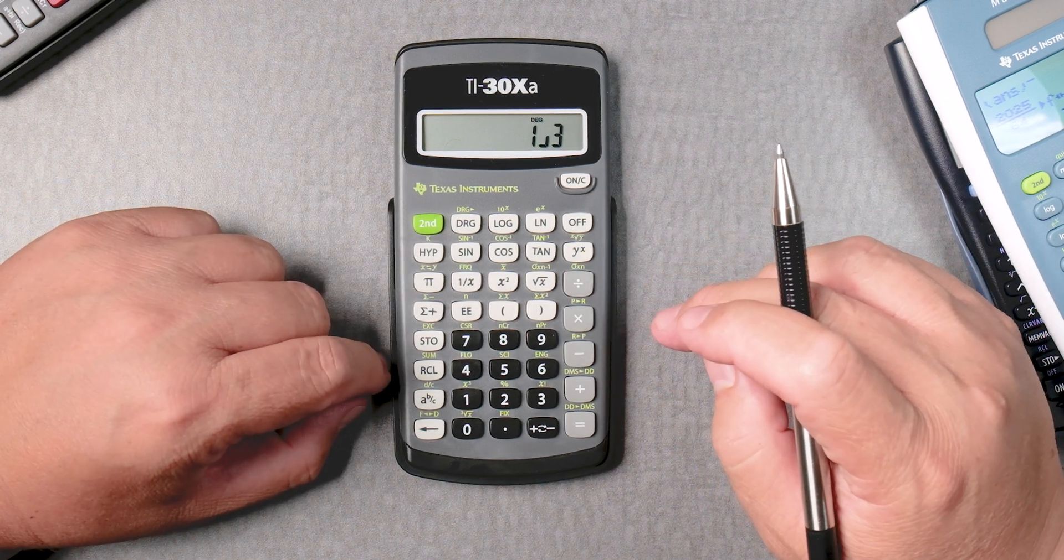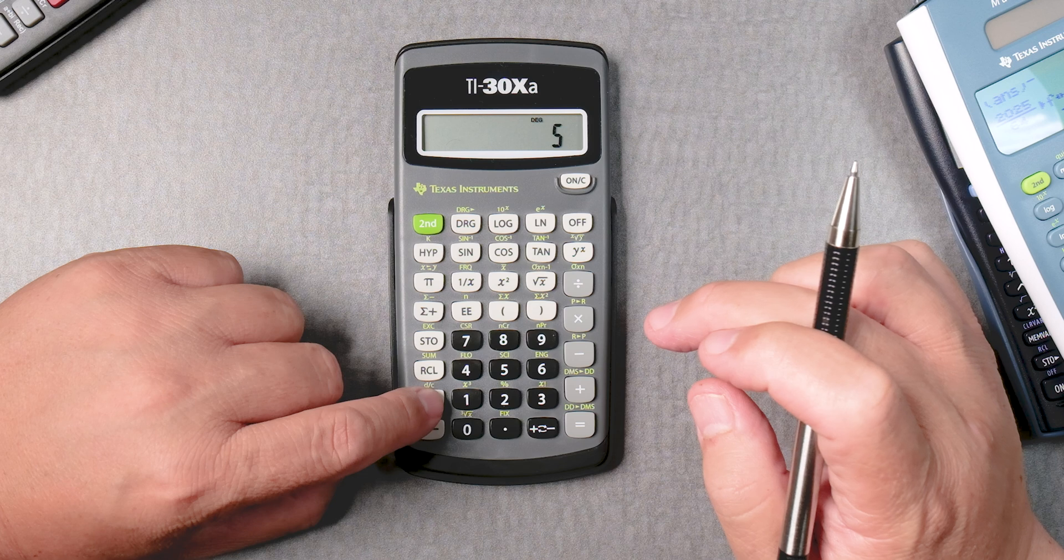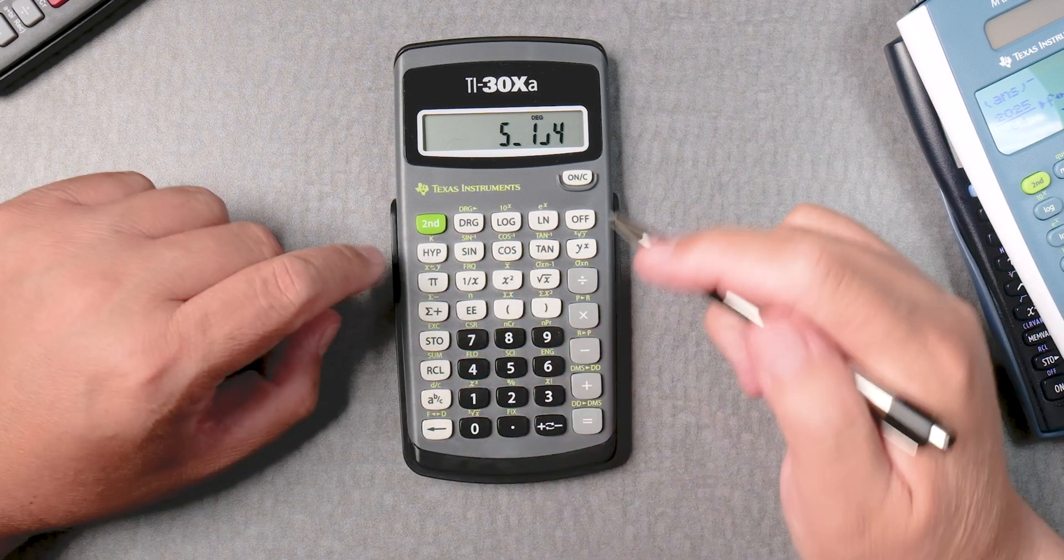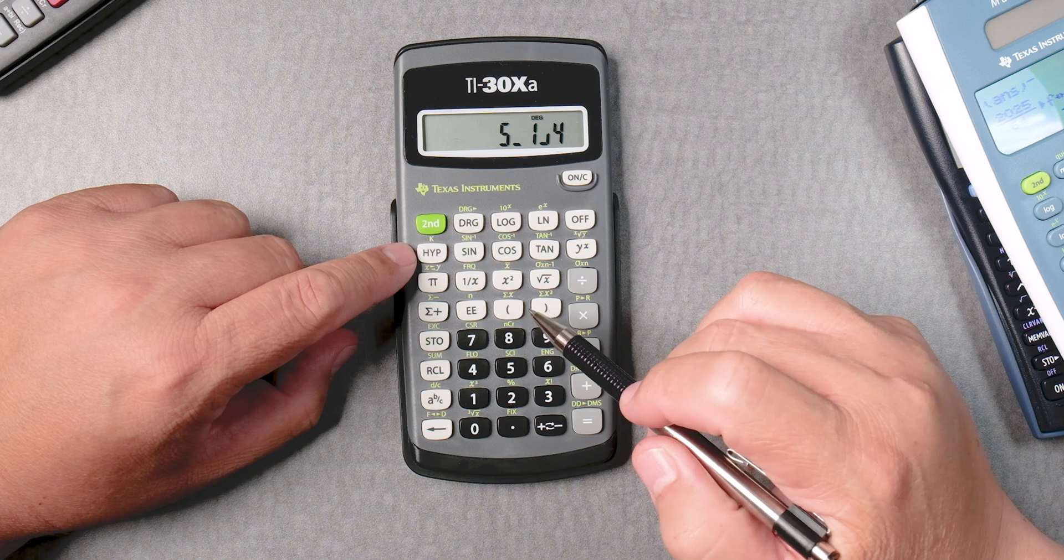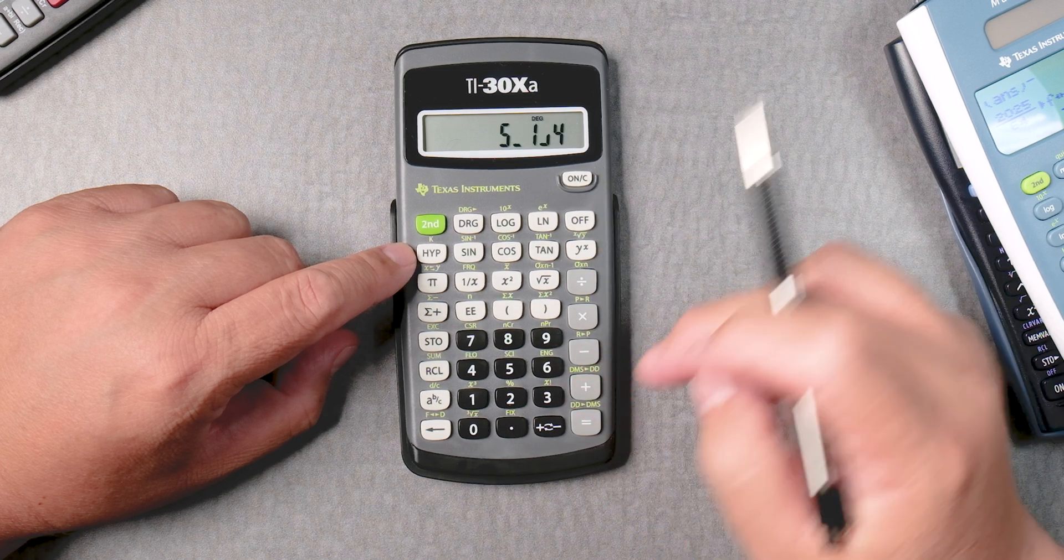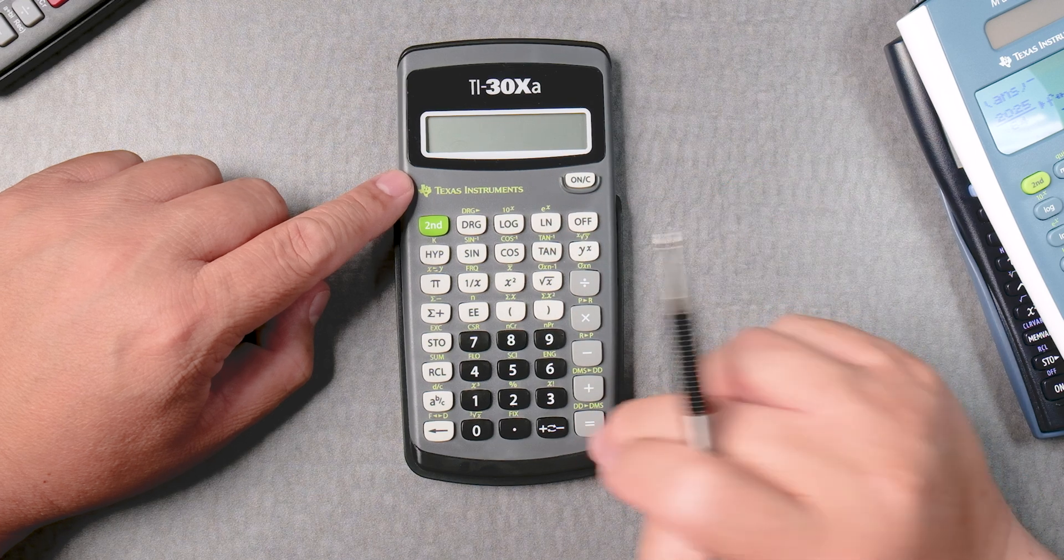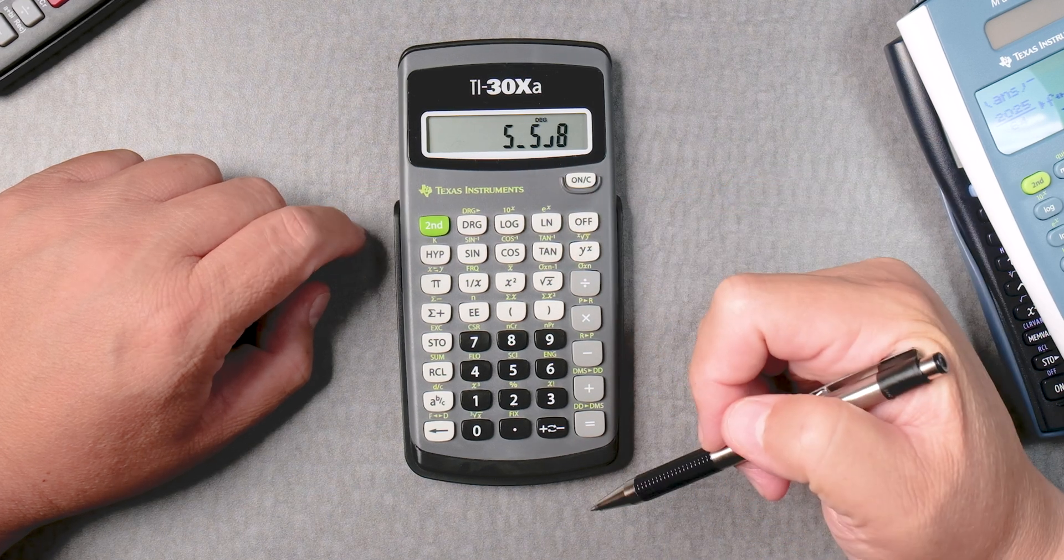Let's say you wanted a mixed number like 5 and 1 fourth, 5 ABC 1 ABC 4, so 5 and 1 fourth. Then you add 3 ABC 8, 3 eighths equals 5 and 5 eighths, mixed number.